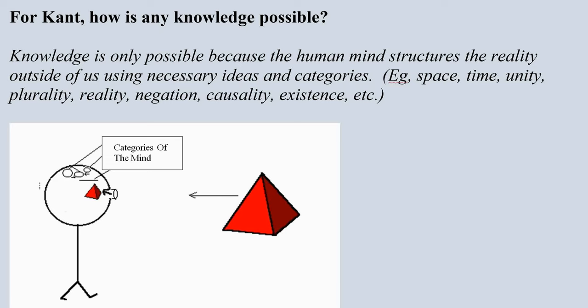Kant did a lot of work in general theory of knowledge before he did his work in philosophy of art, but to understand what he's doing in philosophy of art, we need to understand some of what he did in those earlier works to understand the nature of knowledge in general.